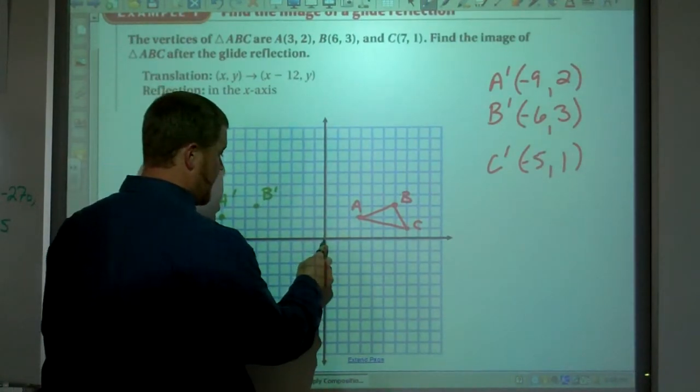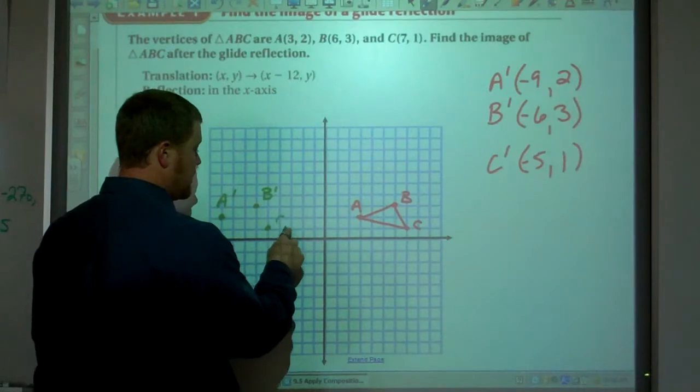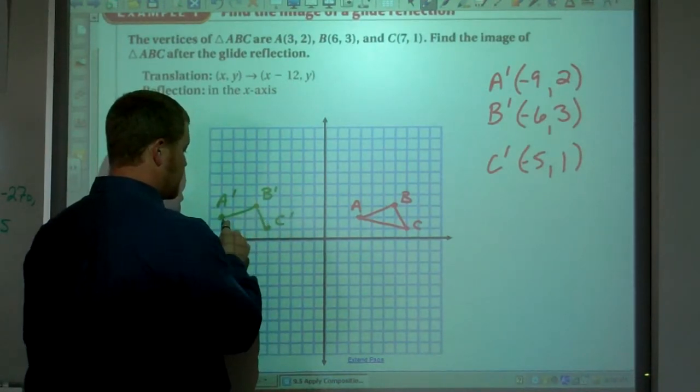And then negative 5, 1. 2, 4, 5, 1. And there's C prime. So there is our translated triangle.